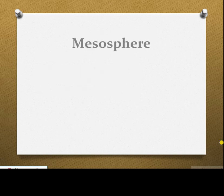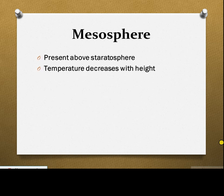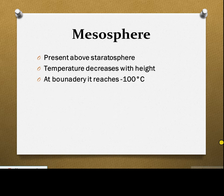The layer next to the stratosphere is the mesosphere. The mesosphere is the layer present above the stratosphere. The temperature in this layer decreases with height — as we go upward, the temperature decreases, and at the boundary of the mesosphere it reaches minus 100 degrees centigrade. This layer is present between 50 to 80 kilometers above the Earth.